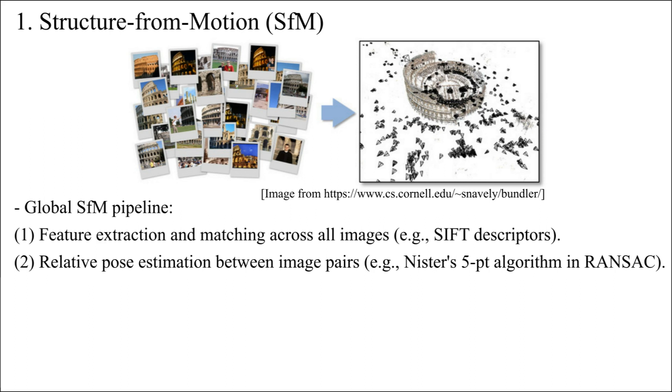Then, perform relative pose estimation between image pairs using Nister's five-point algorithm in RANSAC or other methods. Estimate the global rotations by multiple rotation averaging, and using the initial estimates of the rotations, find the global translations.